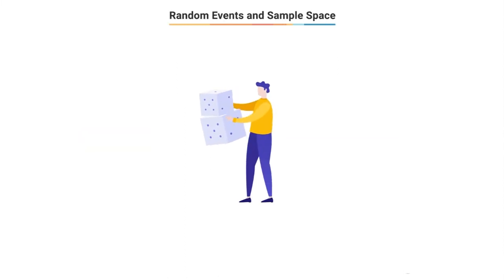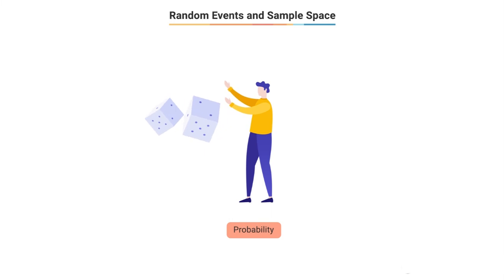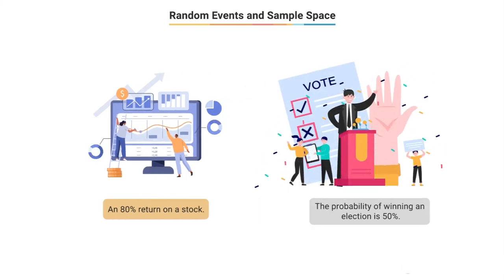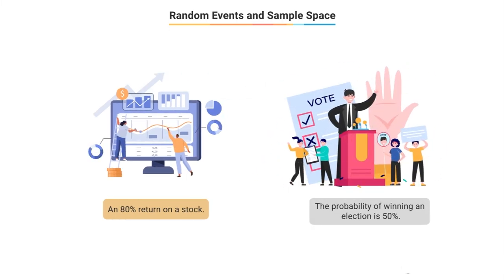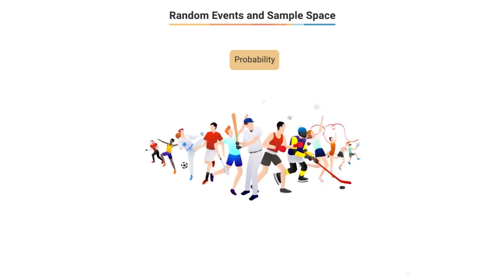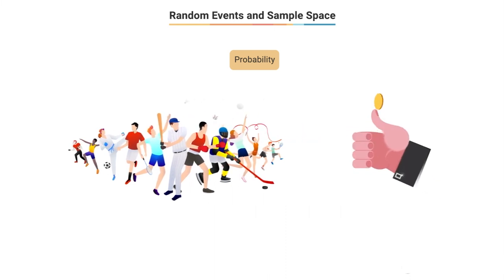At some point in life, you would have heard that the probability of something happening — for example, a stock giving returns above a certain level is 80%, or a particular party winning an election is 50%. But what is this probability and what do these numbers mean? In most of the sports you watch, whether cricket, football, soccer, or basketball, tossing a coin is a very common feature.